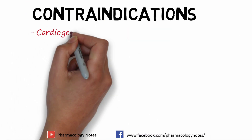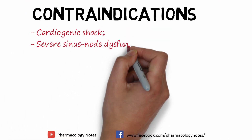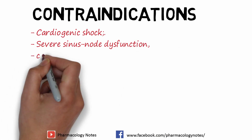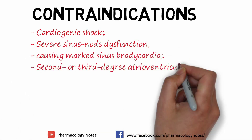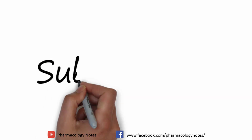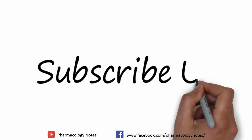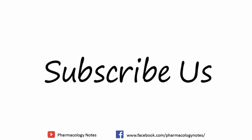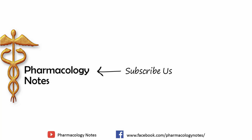Contraindications include cardiogenic shock, severe sinus node dysfunction causing marked sinus bradycardia, and second or third degree atrioventricular block. This covers the basics of class 3 antiarrhythmic drugs. Keep subscribed to Pharmacology Notes — thank you.